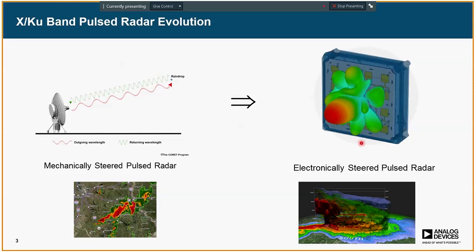By increasing the number of elements in the array, you can also make the beam very sharp and narrow. The kind of results you get from an electronically steered system are similar to the rendering shown on the right, which is a 3D image of a weather system.